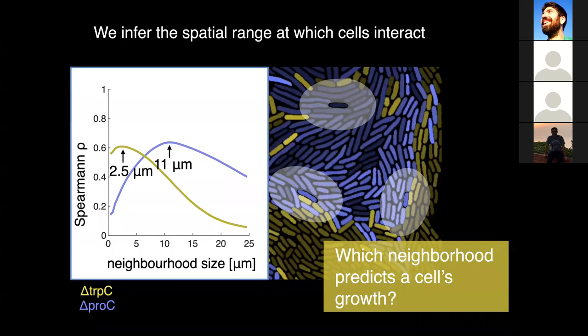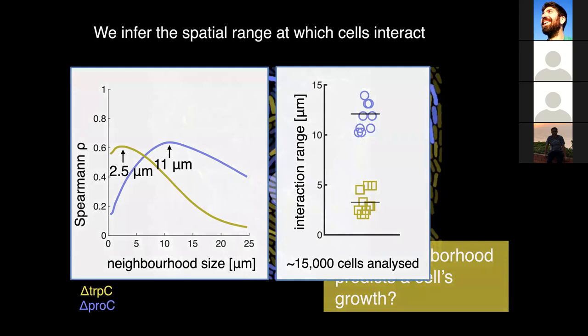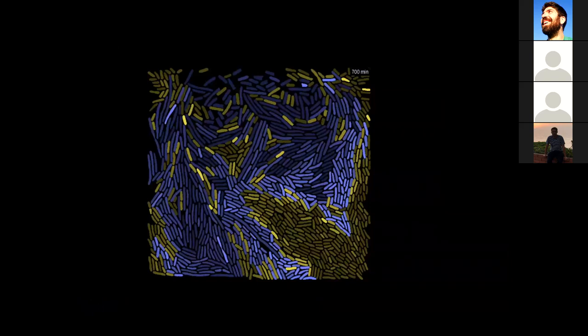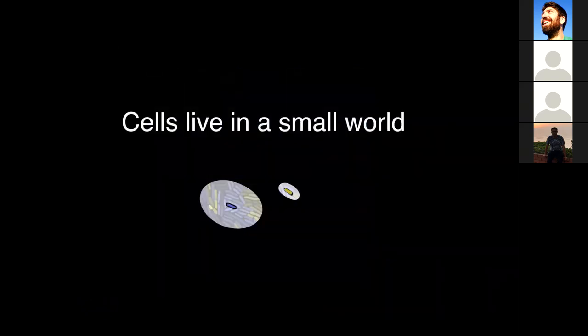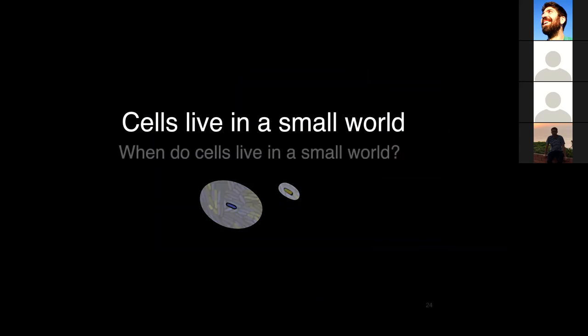When we found those results, which are consistent across 10 different replicates, we really wondered what sets the interaction range. It was surprising for me to think that the world that these bacteria see is very limited around oneself. I like to think that cells live in a small world — this is how a cell perceives the world around itself. It's a very limited horizon. The question is, when do cells live in a small world? What are the parameters that set the interaction range around the cell?